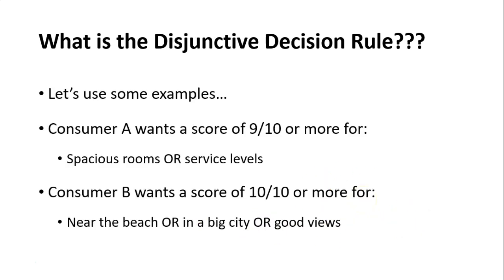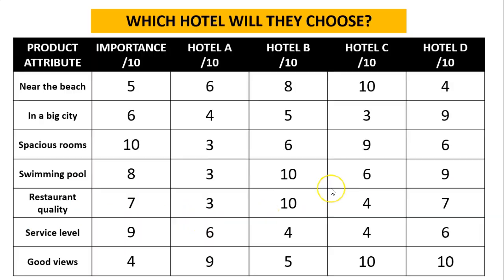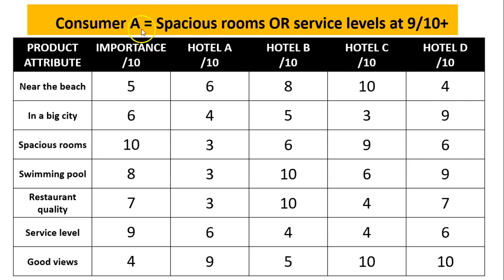To make sense of it, we're going to use two examples for two consumers. The first consumer wants a score of 9 out of 10 for either having spacious rooms or having great service. Consumer B wants a 10 out of 10 score for one of these: near the beach, big city, or good views. So we go back to our table here — consumer A is looking at spacious rooms and service levels at 9 plus.